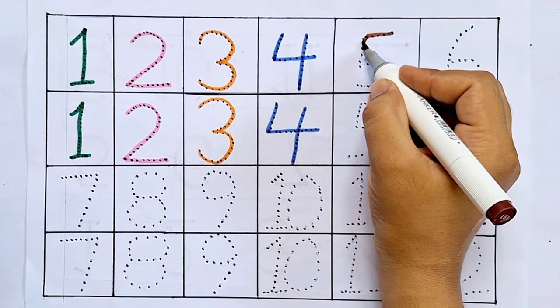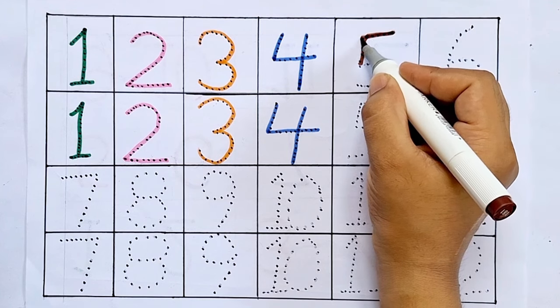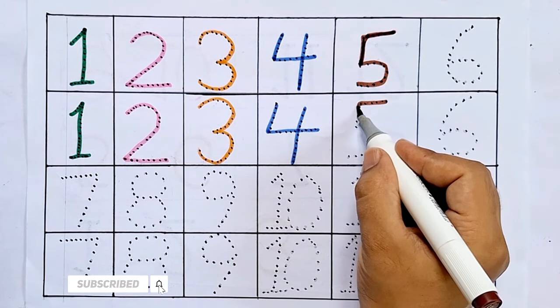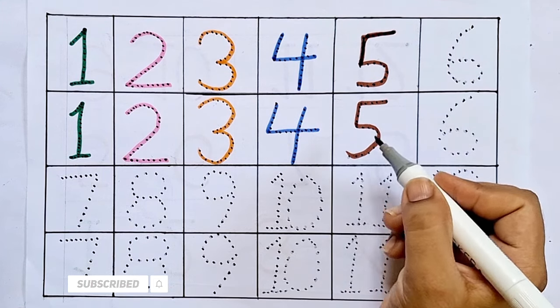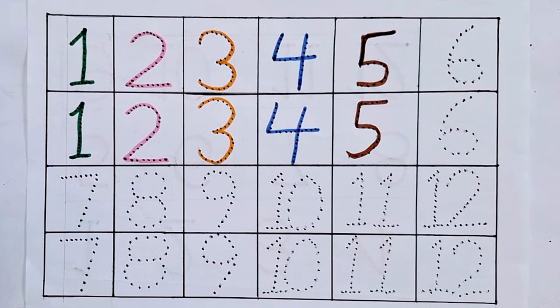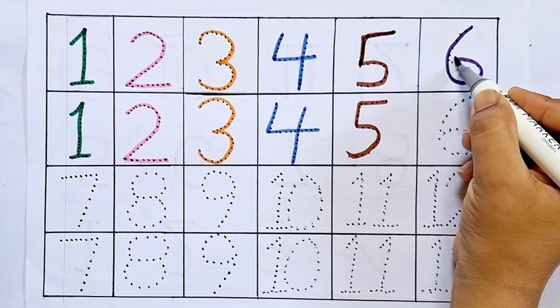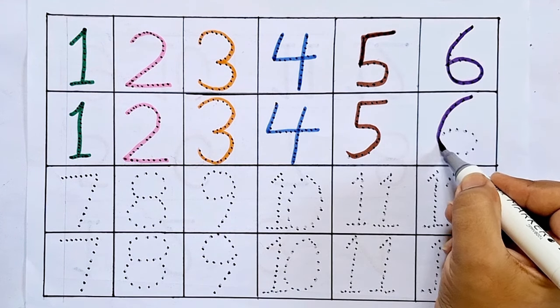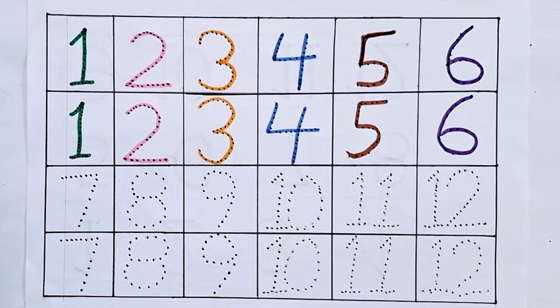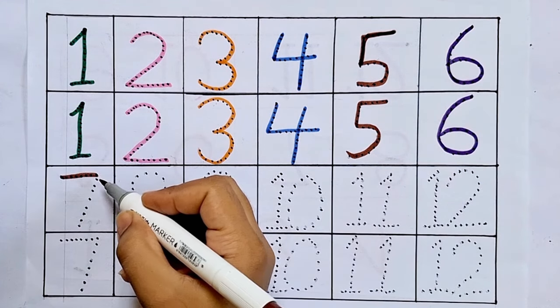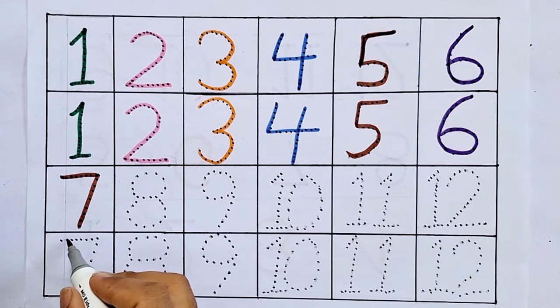Five. This is five. After four comes five. Six. This is six. After five comes six. Seven. This is seven. After six comes seven.